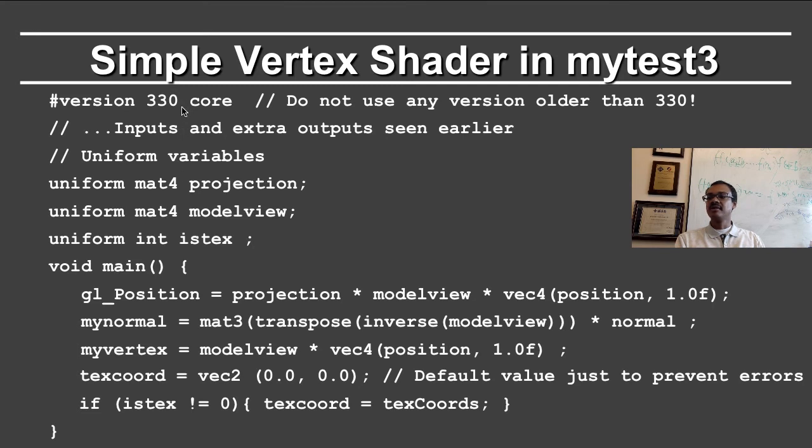Let's look in more detail at the shader. Again, we have the version 330 core. This was all the code we saw earlier. The uniform variables are variables that are the same for all vertices. In this case, they are the projection matrix and the model view matrix. Both projection and model view matrices are 4 by 4 matrices, which are specified with the command uniform mat4. Istex simply says are we doing texturing or are we not? It's just a flag.